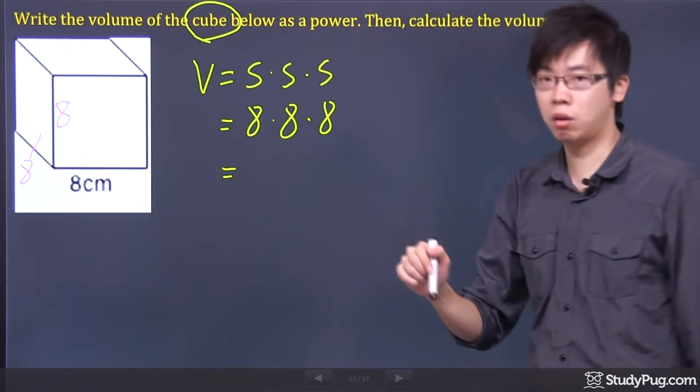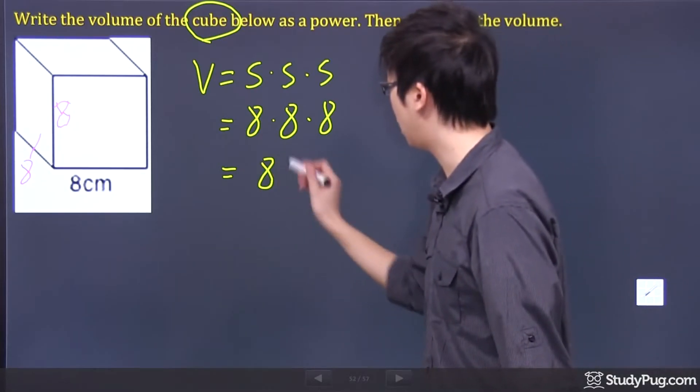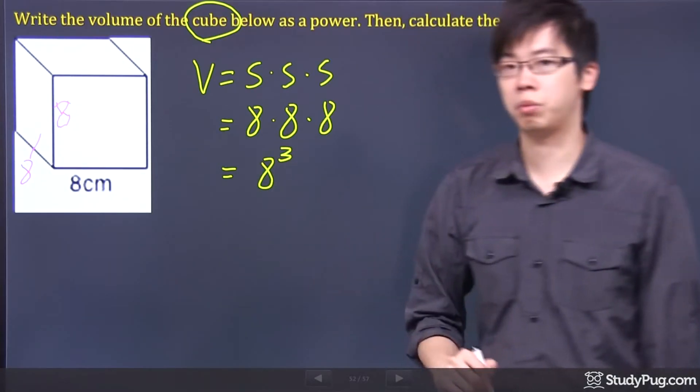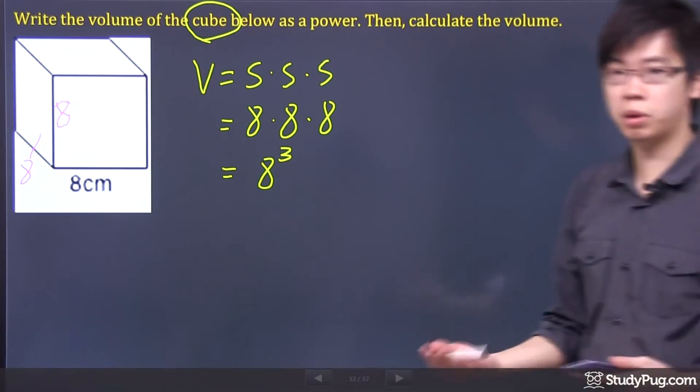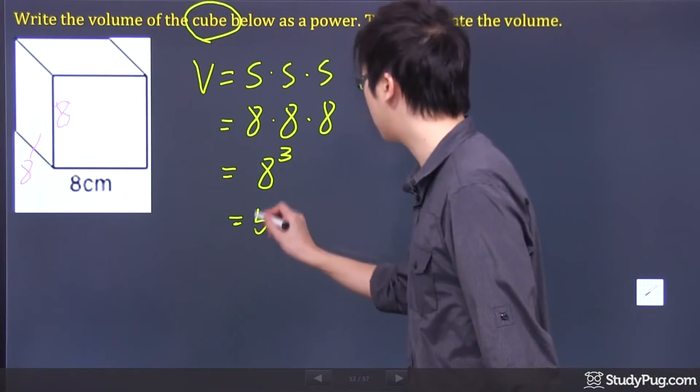Now, if I want to write that as a power, it would just be the base of 8 raised to the power of 3. And once you're done with that, you're just going to have to use a calculator, punch it in, you get 512.